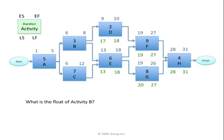Activity B is a little trickier. What's the latest B may finish for D to have a late start of day 17 and E a late start of day 13? I look at the smaller number, day 13, and subtract 1. The latest B may finish is day 12. Looking back at activity B, what's the latest B may start? 13 minus 3 plus 1 equals 10. The latest B may start is day 10, with a duration of 3 and a late finish of day 12.